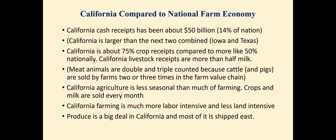California cash receipts are about $50 billion — about 14% of national agriculture, bigger than Iowa and Texas combined. Our receipts are about 75% crops, even though dairy is the number one commodity in California in terms of farm revenue. Meat and poultry products are very small in California compared to the rest of the country. California is also less seasonal, much more labor intensive, less land intensive, and produce is a big deal.